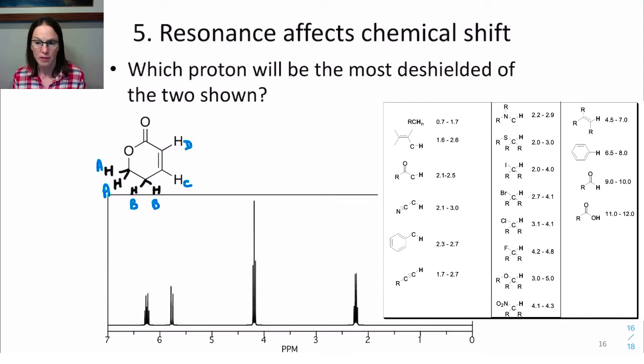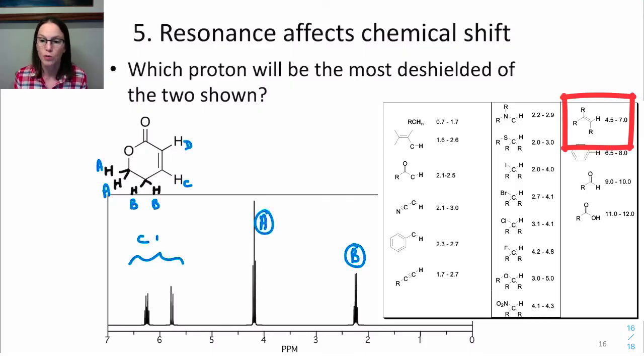So we can use a chemical shift table to estimate the chemical shift of each of these protons. So protons A would be represented by a signal around 4.2. The most shielded protons would be protons B, so they're near but not on the electron withdrawing alkene. So they'd be just over 2 ppm. And the alkene protons will be represented by those two signals above and below 6 ppm.